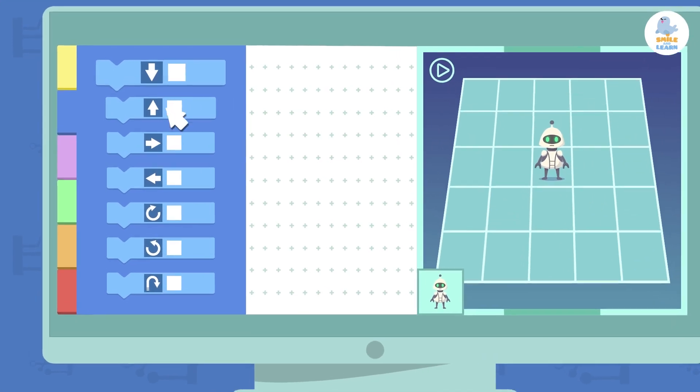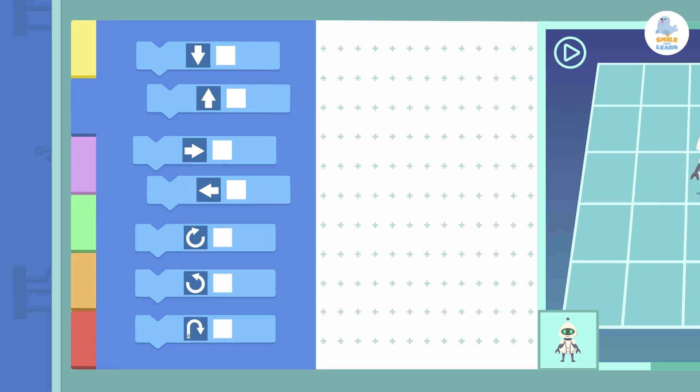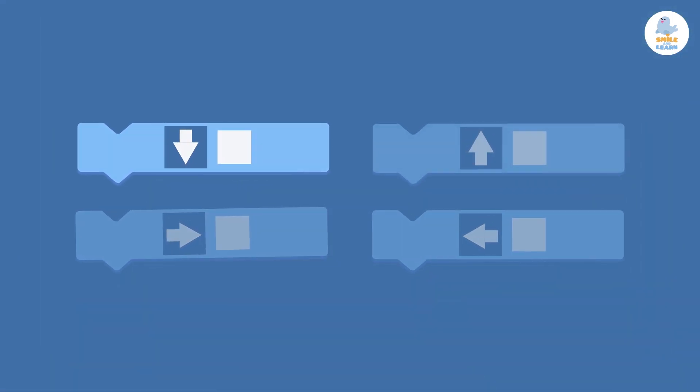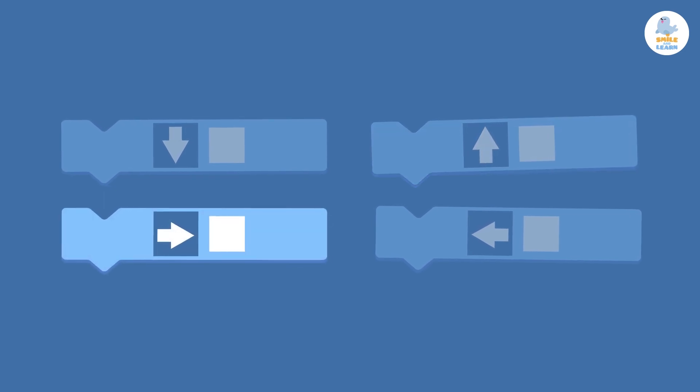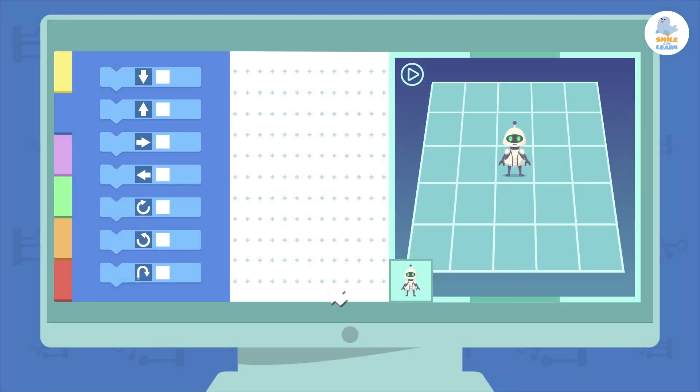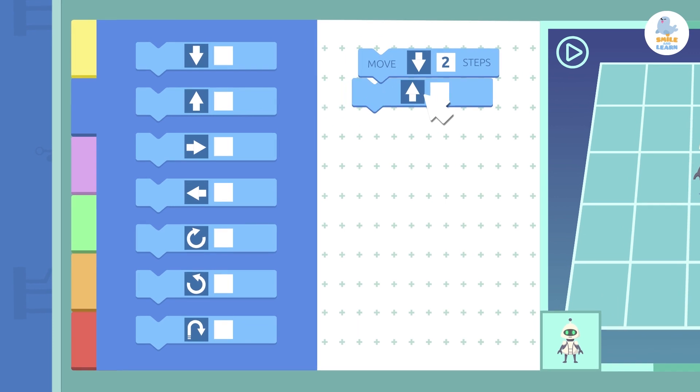To move it, you could use different motion blocks. The most basic ones are those that allow you to move forward, backwards, to the right, and to the left. First I'll program my player to take two steps forward and three steps back.